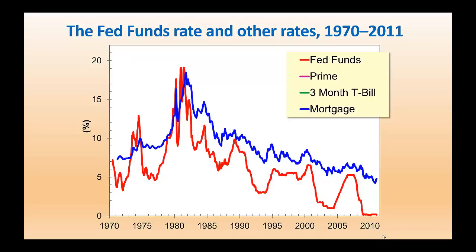By targeting the federal funds rate, the Fed is able to influence other interest rates in the economy. If the Fed is concerned about inflation, like we see here in the late 70s and early 80s, it will set a high target for the federal funds rate and conduct the necessary open market sales to push the federal funds rate up. After the financial crisis, the Fed was very concerned about the recession it created. As a result, the Fed set a very low federal funds rate target, and in order to achieve that target, the Fed had to do a lot of open market purchases.